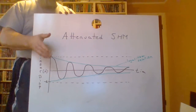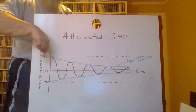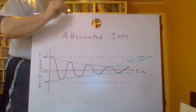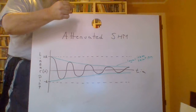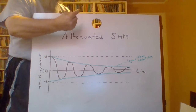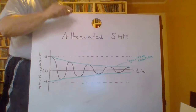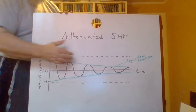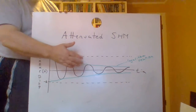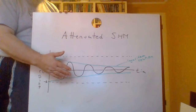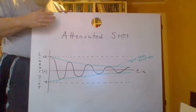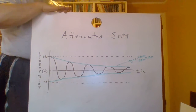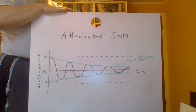This is what we mean by attenuation — a decrease in amplitude over time because a non-conservative force is converting the energy of the vibration into another form of energy. For a pendulum, that would be the energy of moving air molecules out of the way and the heating of molecules at the attachment point. For a spring, it would be the heating happening in the coils because the elastic nature is not ideal.